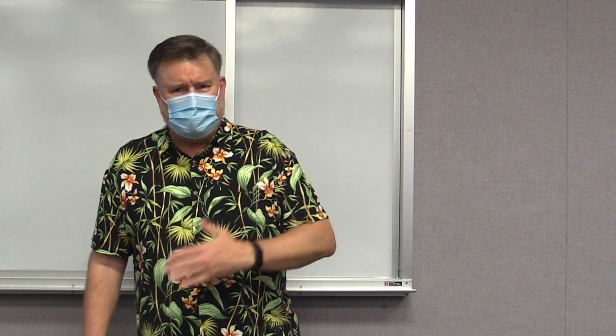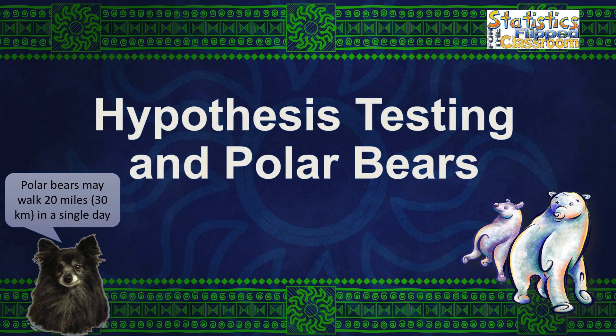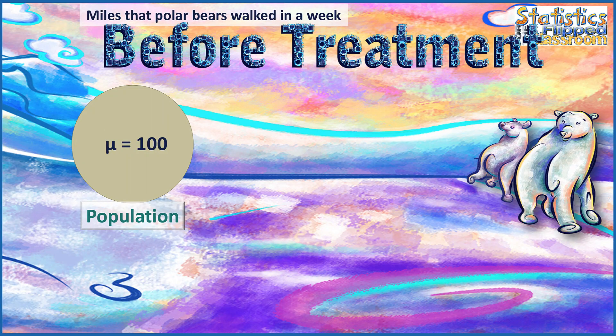Let me explain chance versus effect using an example with polar bears. Polar bears love to walk — sometimes hundreds of miles. A National Geographic show tells us that on average, polar bears walk 20 miles in a single day, or 100 miles per week. We want to do some inferential statistics with that. We start with a population of polar bears that walk 100 miles per week, and we're going to draw some samples from this population.